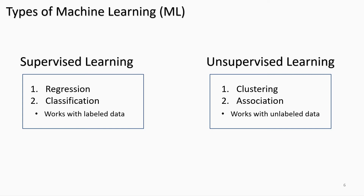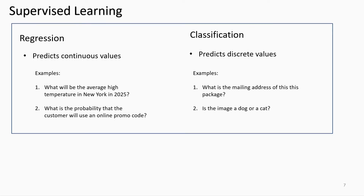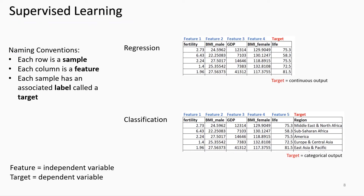Focusing on supervised and unsupervised learning, there are two lower-level subcategories for each. The main focus in this module is regression, which is a type of supervised learning. Which machine learning algorithm to use depends on what needs to be predicted: when the target variable is a continuous value, a regression algorithm is used; if it deals with a discrete variable, a classification algorithm is used.